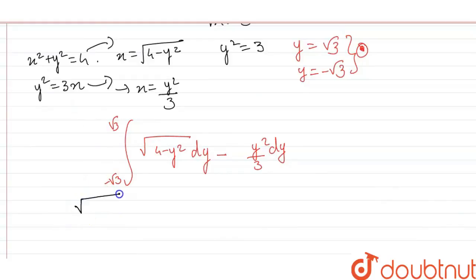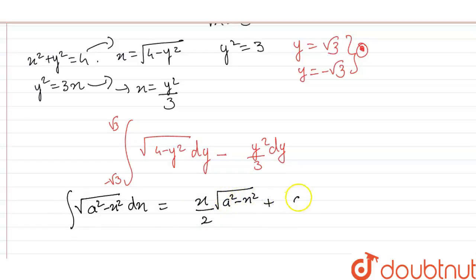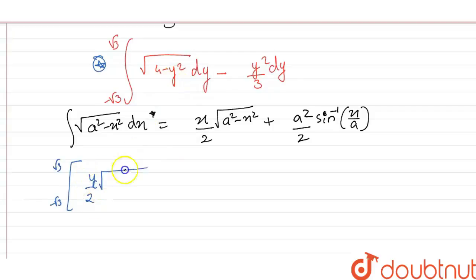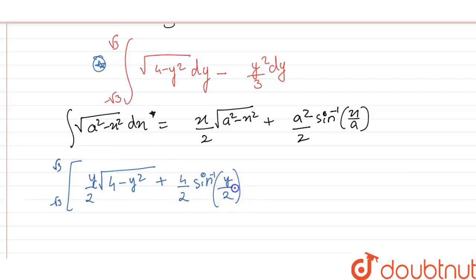The formula for ∫√(a² − x²) dx is (x/2)√(a² − x²) + (a²/2) sin⁻¹(x/a). Applying this with a = 2 and integrating in terms of y, we get [y/2 · √(4 − y²) + 2 sin⁻¹(y/2) − y³/9] evaluated from −√3 to +√3.